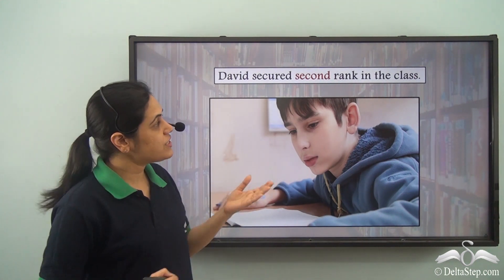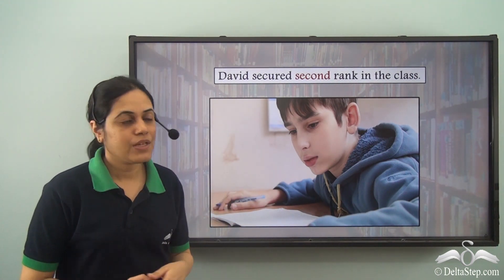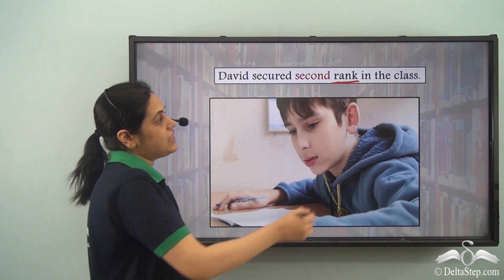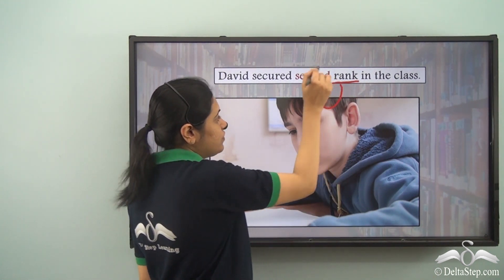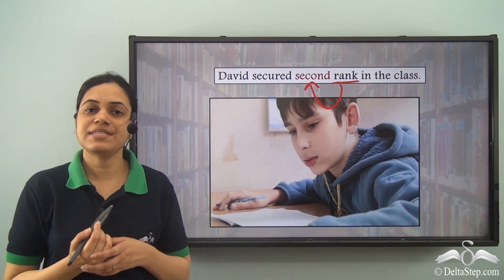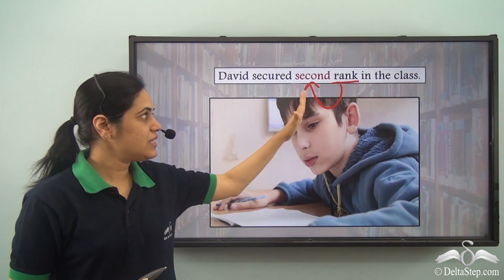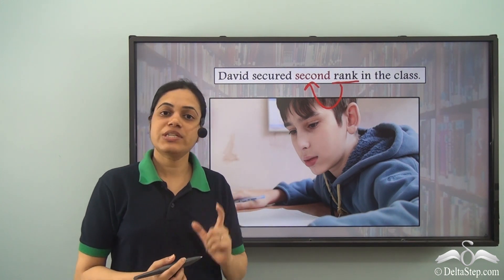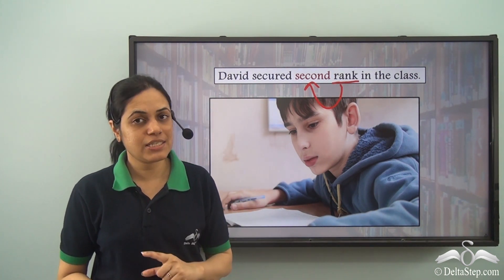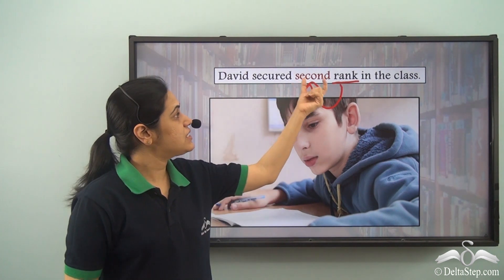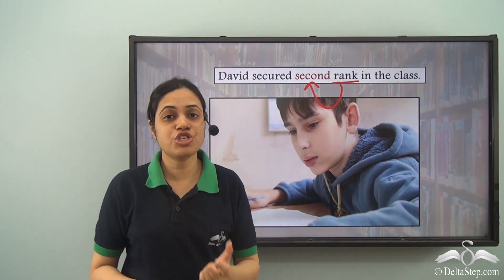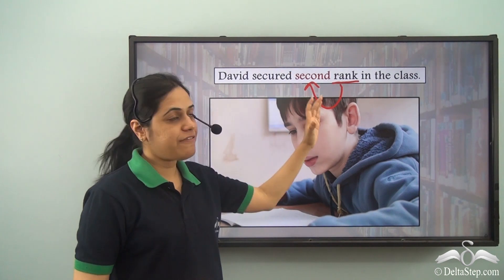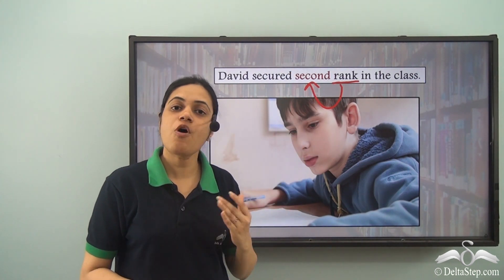'David secured 2nd rank in the class.' Here, rank is the noun and describing this noun is the adjective 2nd. The word 2nd is telling us about the exact rank, so it is a definite numeral adjective. And because it is telling us about position, it is a definite numeral adjective of ordinal type.